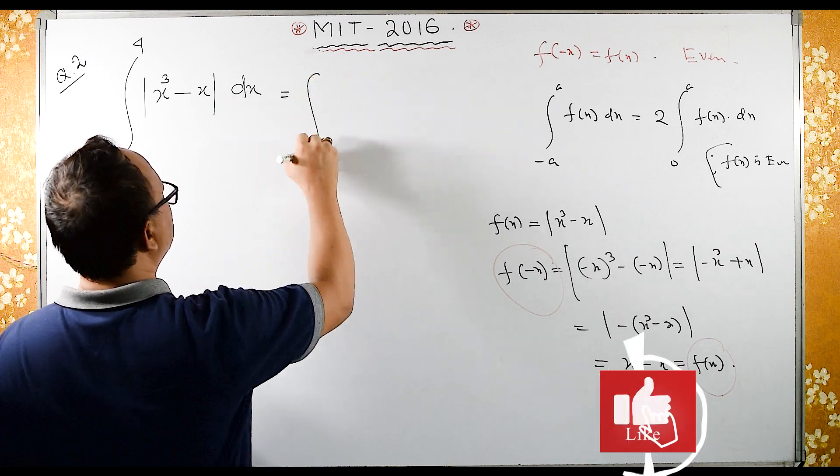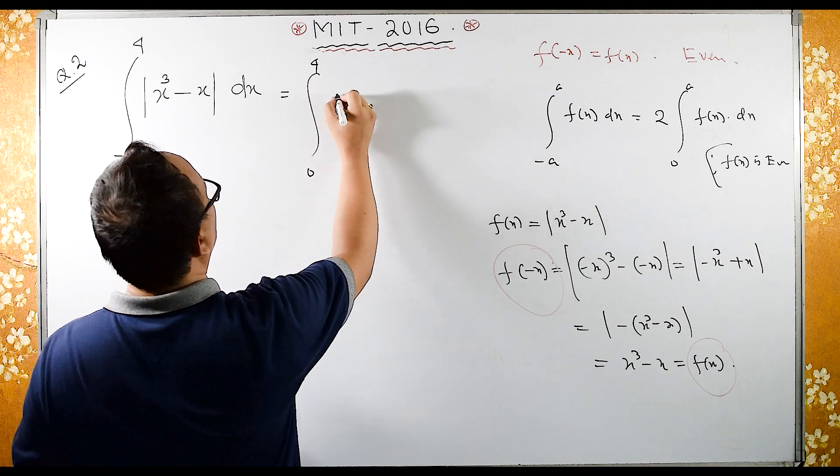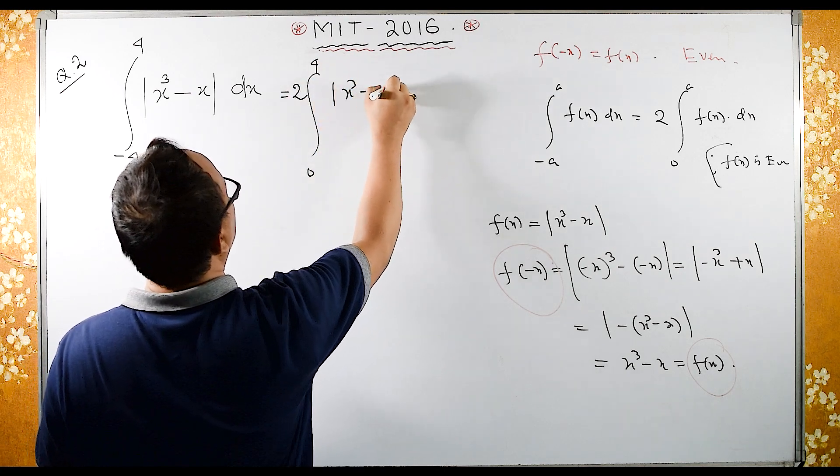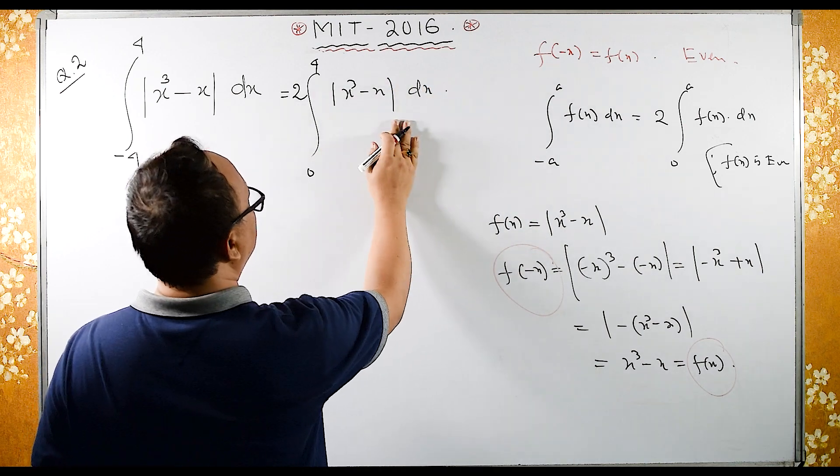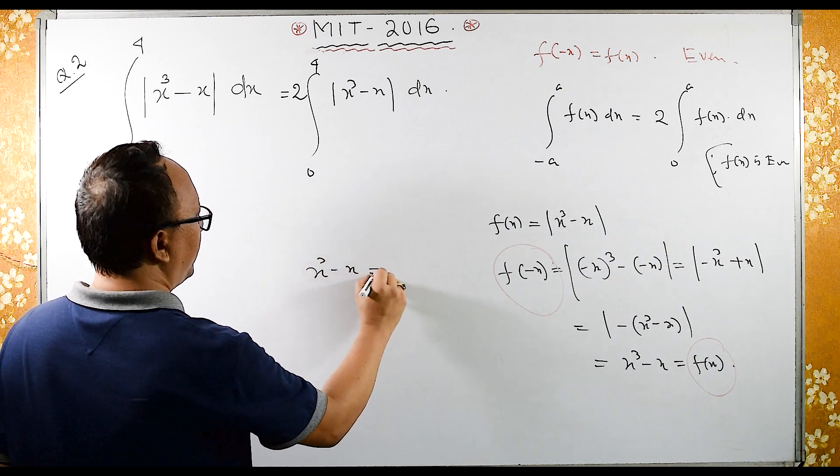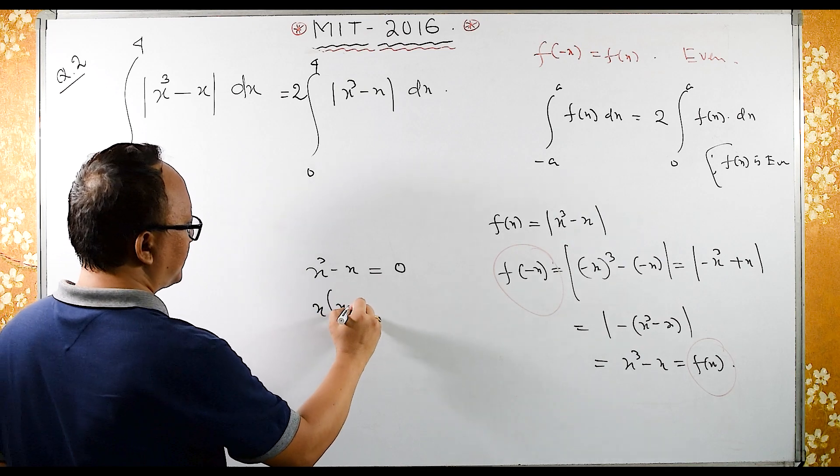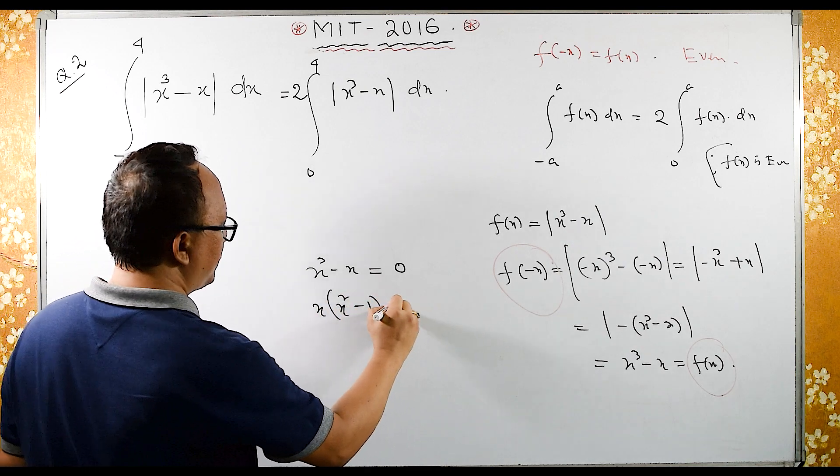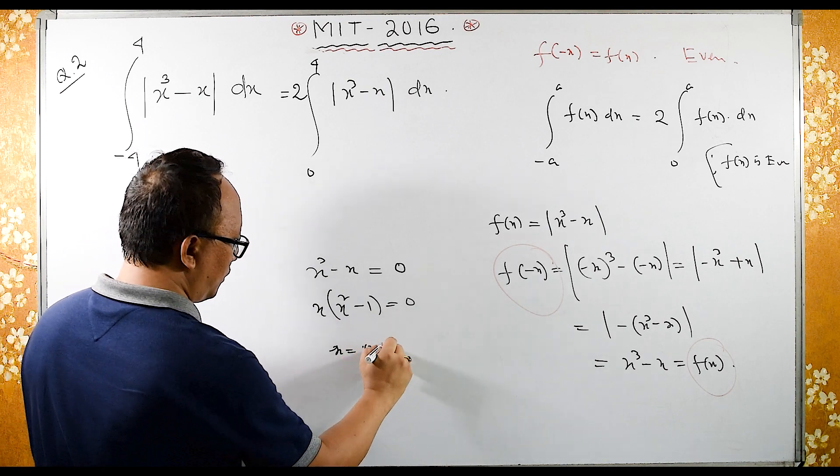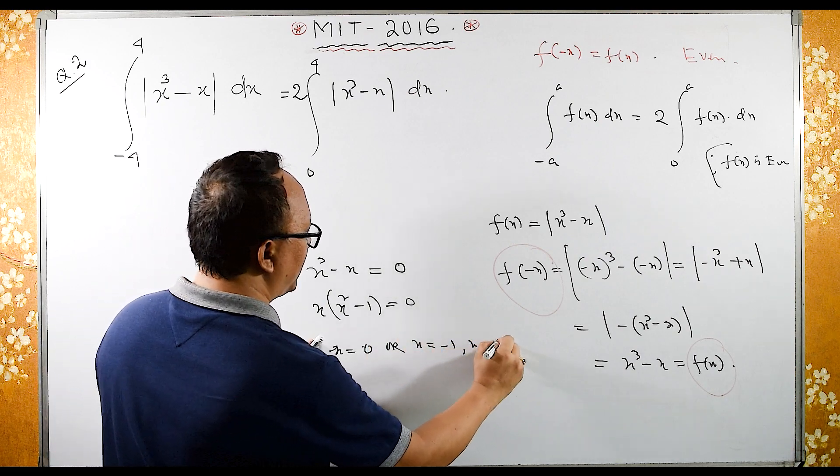So this can be written as twice 0 to 4, x cube minus x dx. Let us consider this, what is x cube minus x? Here x cube minus x when it is equal to 0, then if I take x common then x square minus 1 is equal to 0, means either x equal to 0 or x equal to plus 1 or minus 1.